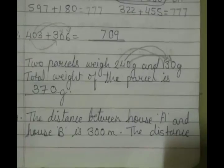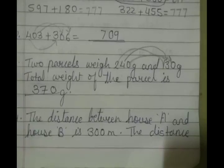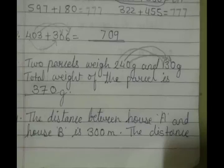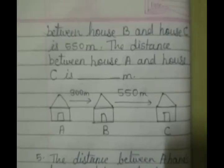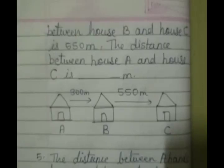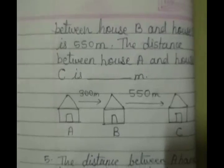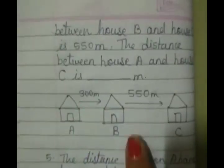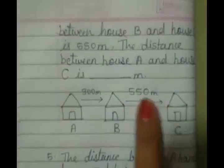Now problem number 4. The distance between house A and house B is 300 meter. The distance between house B and house C is 550 meter. The distance between house A and house C is what? You can see here, house A and B, 300 meter. Then house B and C, 550 meter.